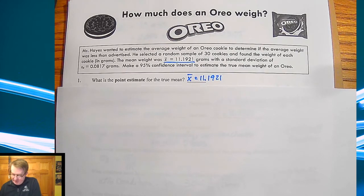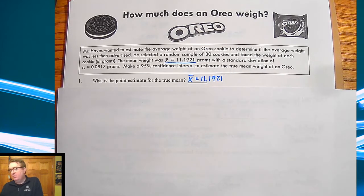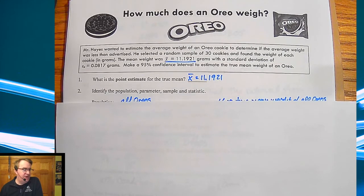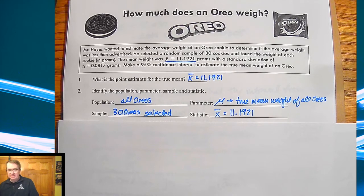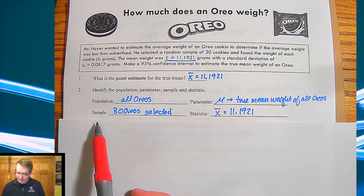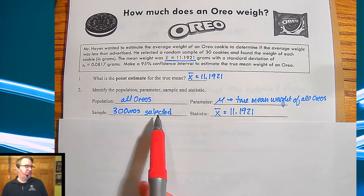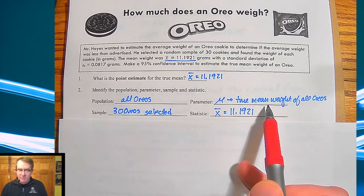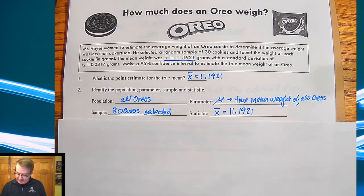So point estimate is my x bar that's the mean again a lot of stuff we're pulling from earlier in the year we're just putting it into the context of confidence intervals. Here are my four basic name stuff right we set up stuff so we've got population all Oreos my sample is my 30 Oreos my mean is the true mean weight of all Oreos and then my sample statistic is x bar is 11.1921.